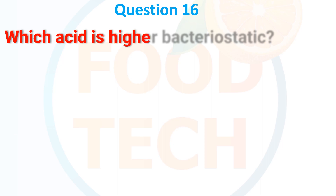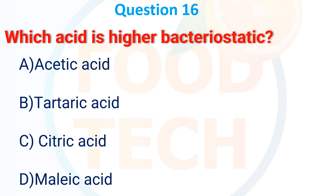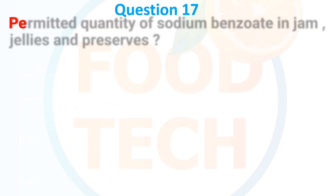Which acid has higher bacteriostatic activity? A. Acetic acid, B. Citric acid, C. Citric acid, D. Malic acid. The answer is A. Acetic acid.